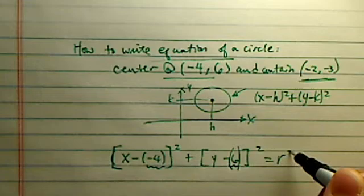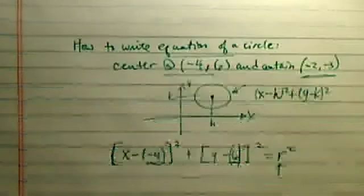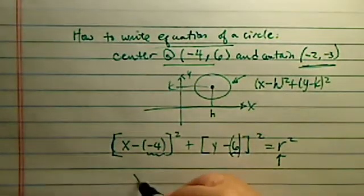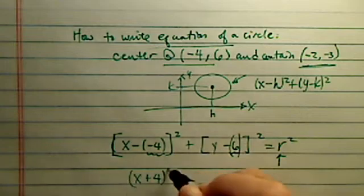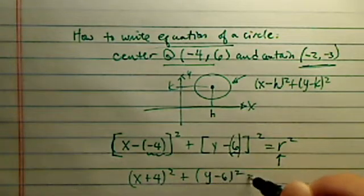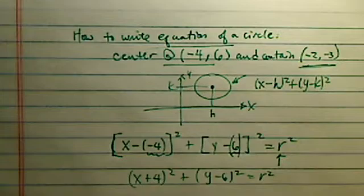6 here. You go to r squared. So the only thing that's missing is the radius. And so let's simplify this a little bit. x plus 4 squared plus y minus 6 squared equal to r squared. Well, how are we going to find this r squared?